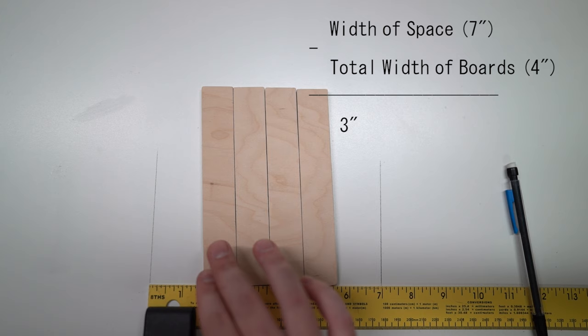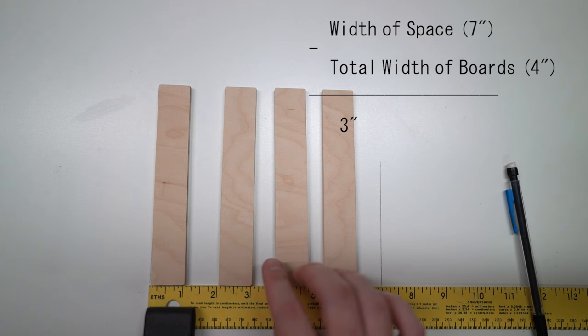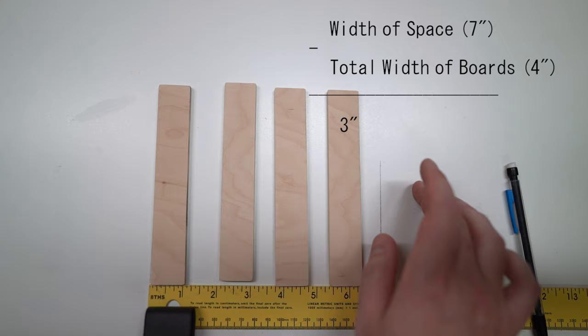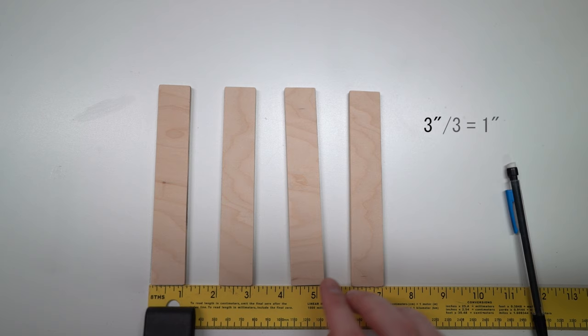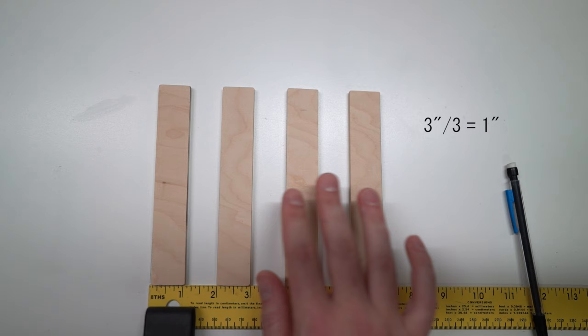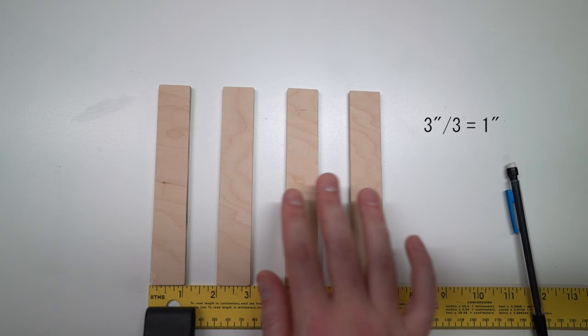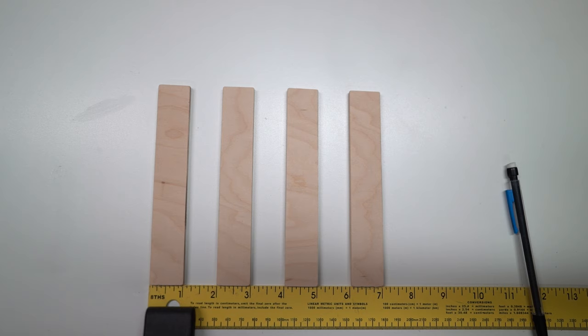The three inches is then divided by the number of spaces in between the items that you have, not including anything outside of the end pieces. So three inches total, right? Seven minus four, and then three divided by three is one. And so that makes this really easy. One inch spacing between all of these styles would be equal distance from each other, and it's shown here pretty obviously.